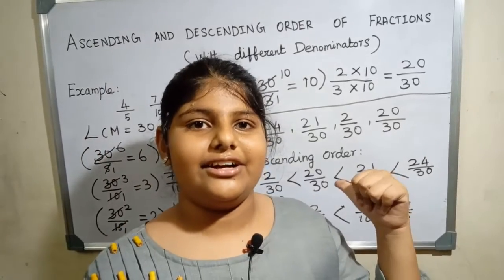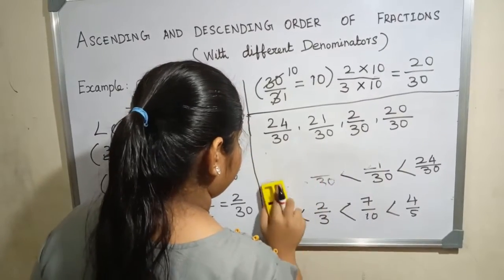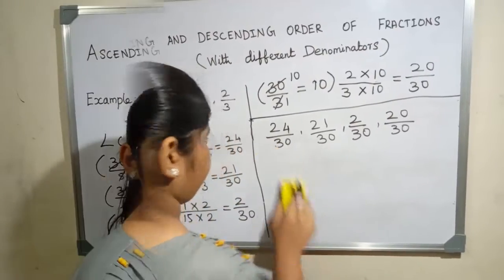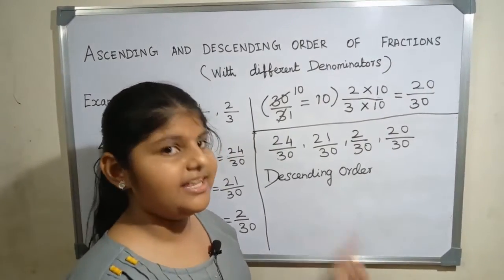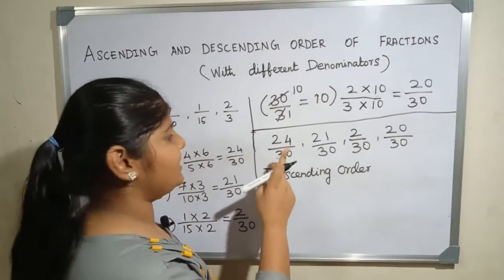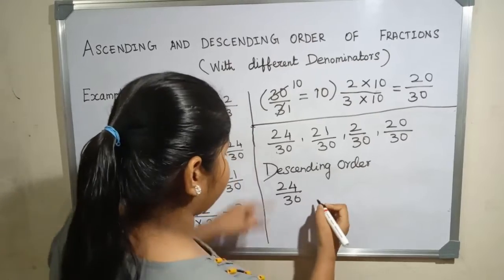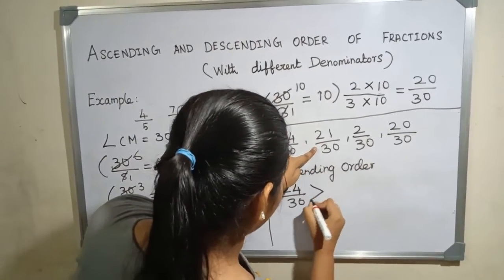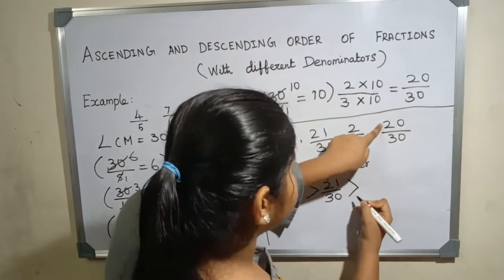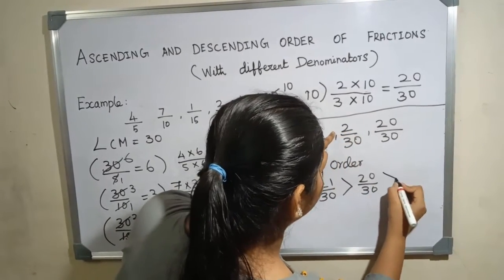Next, let us see descending order. Using numerator, let us arrange the fractions in descending order. The greater number is 24 by 30. Next, 21 by 30, 20 by 30, 2 by 30.